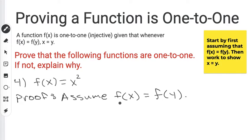So what that means is I can replace f(x) with x squared. When I do that, I get x squared equals f(y), which is just replacing the variable x with the variable y. Instead of x squared, you're going to get y squared. So now I have x squared equals y squared.